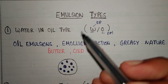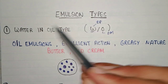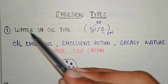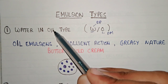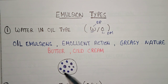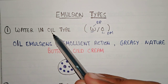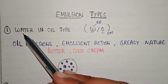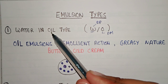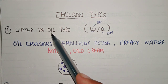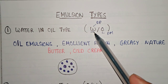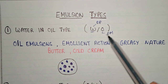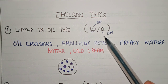In this video we will learn about types of emulsion. The first type is water-in-oil emulsion. When we say water-in-oil, it means that water is the dispersed phase and oil is the dispersed medium. As shown in this diagram, the medium is oil, and water exists in the form of droplets scattered in the oil. It is represented as W/O, where W represents water (dispersed phase) and O represents oil (dispersed medium).